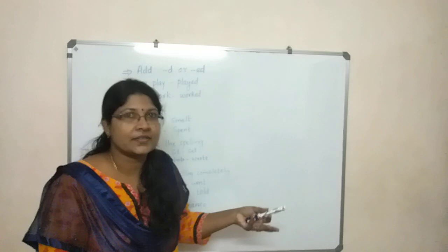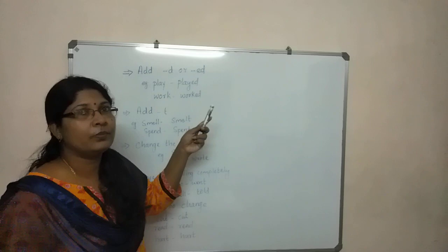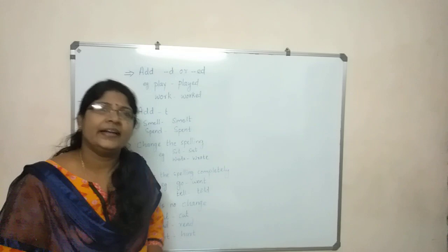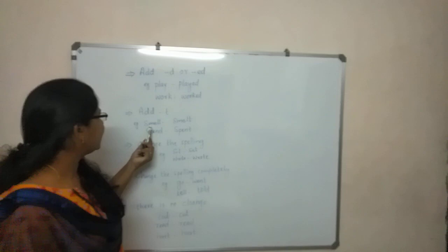To change from present tense to past tense, you need to change the verb. Usually most verbs add '-ed' to form the past tense. However, some verbs change differently — for example, 'smell' becomes 'smelt', and 'spend' becomes 'spent'.